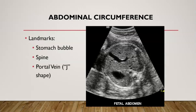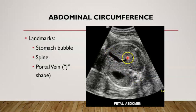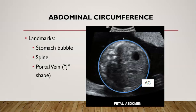Abdominal circumference is going to be measured in the transverse plane at the level of about the baby's belly button. We're going to include three landmarks: first is this anechoic structure, the baby's stomach bubble; second, the fetal spine; and third, this anechoic J-shaped structure, which is the portal vein. Once you're at the correct level with the landmarks, you want the abdomen to appear as circular as possible — an oval shape indicates an oblique cut, which is going to give you a false measurement. Just like head circumference, we use an ellipse to measure around the fetal abdomen, and you're going to include the skin line.